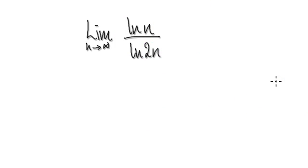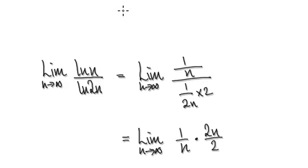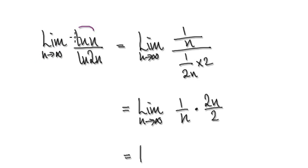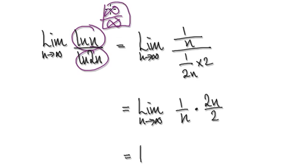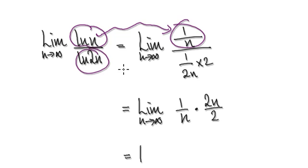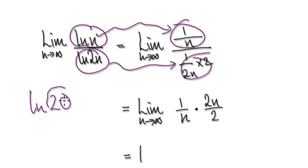Let's just prove it. We're trying to find the limit of this as n tends to infinity. As n tends to infinity, the numerator is going to head towards infinity, and the denominator is going to head towards infinity. You've got an indeterminate form, so you can apply L'Hôpital's rule. Differentiate the numerator — that will give you this. Differentiate the denominator — that will give you this.